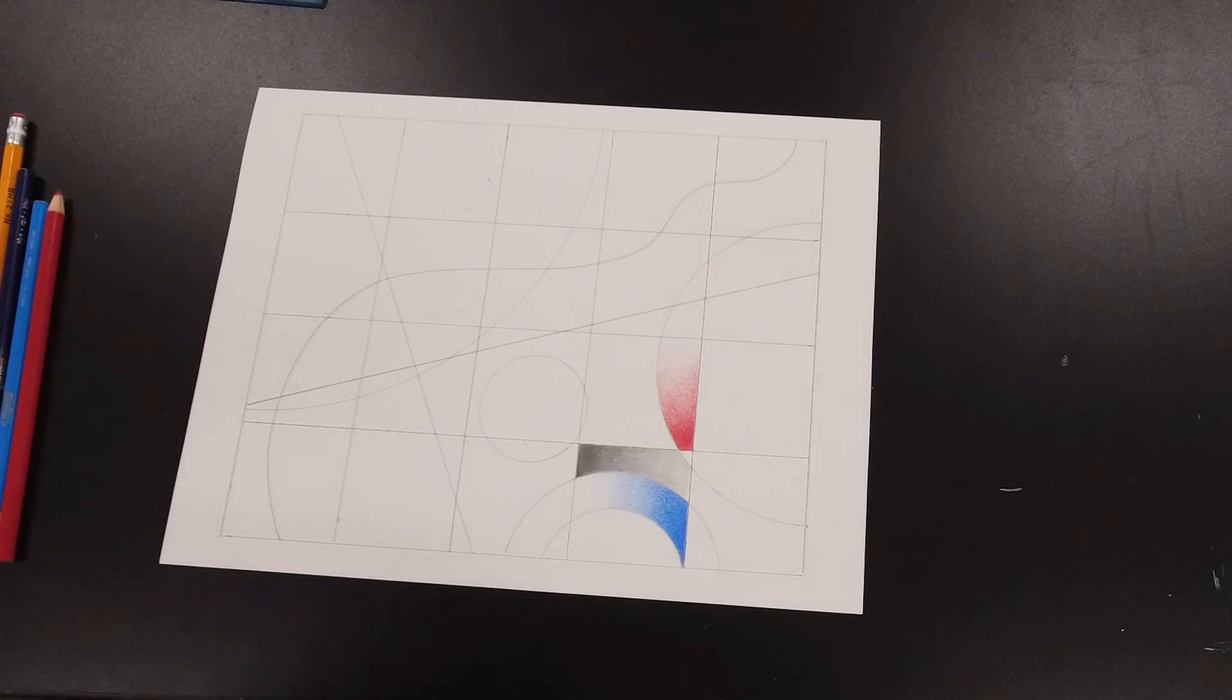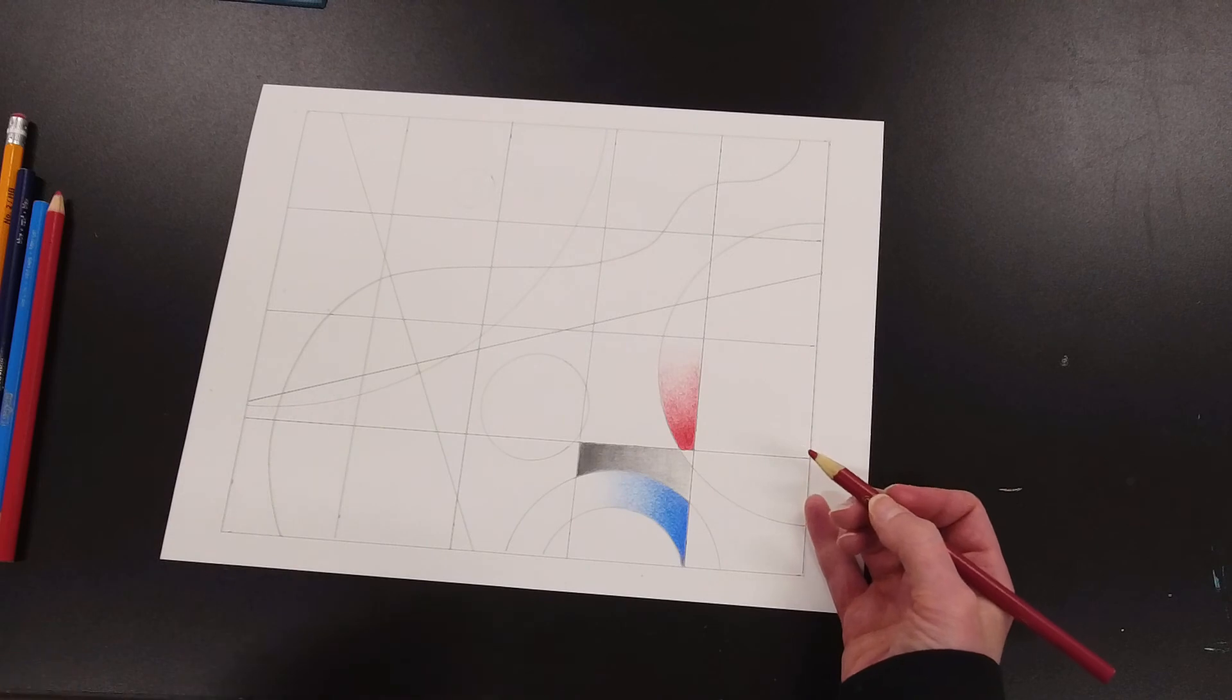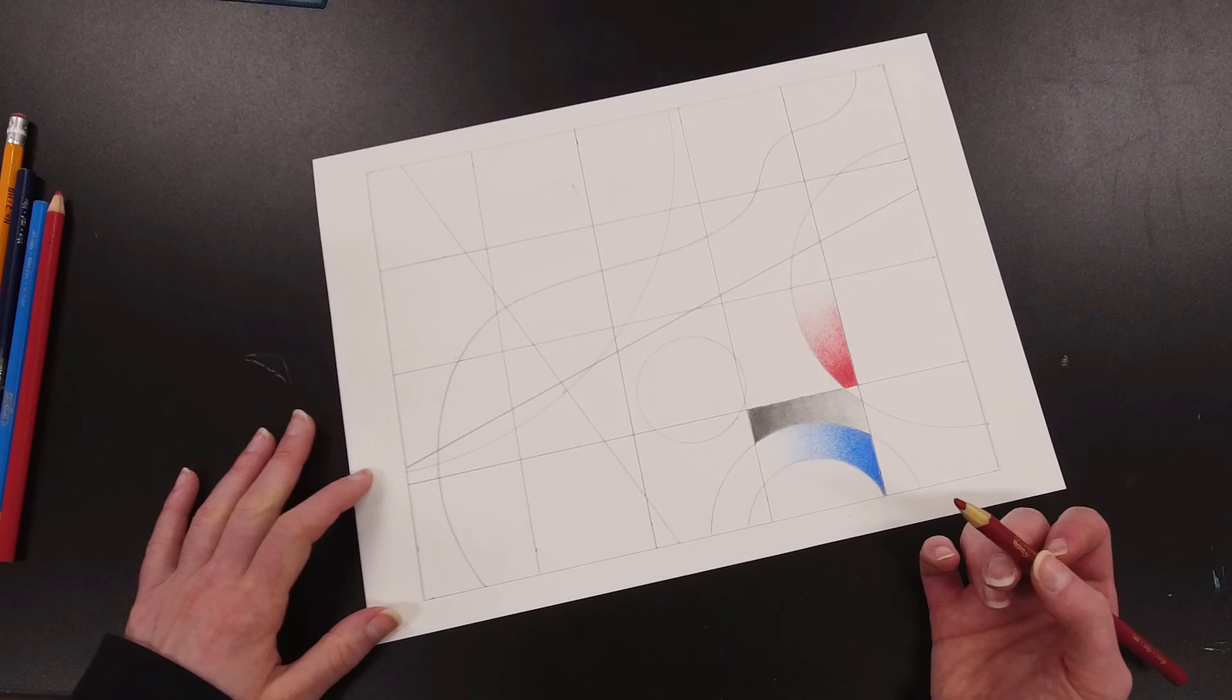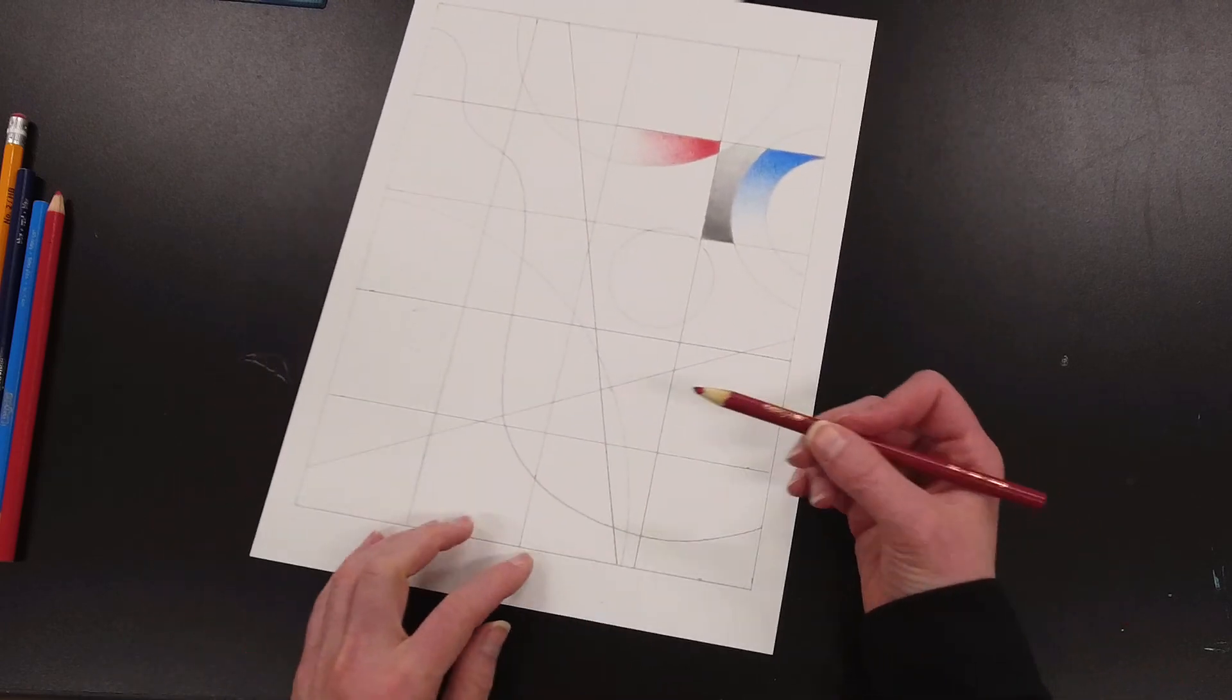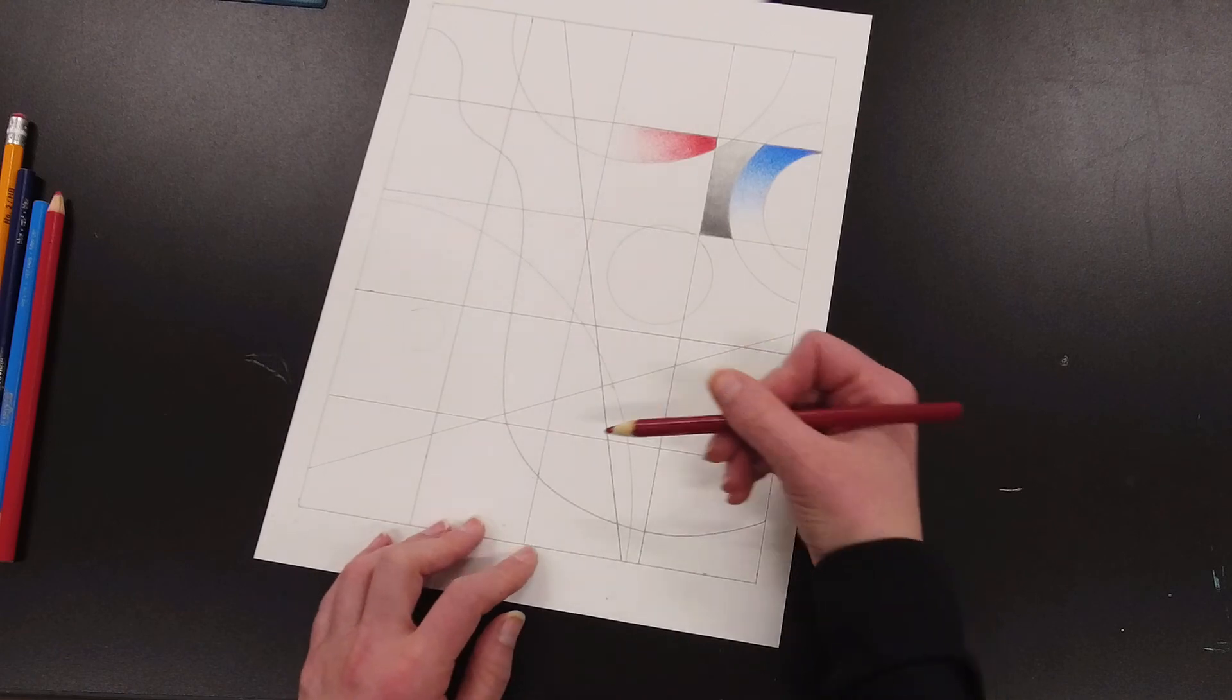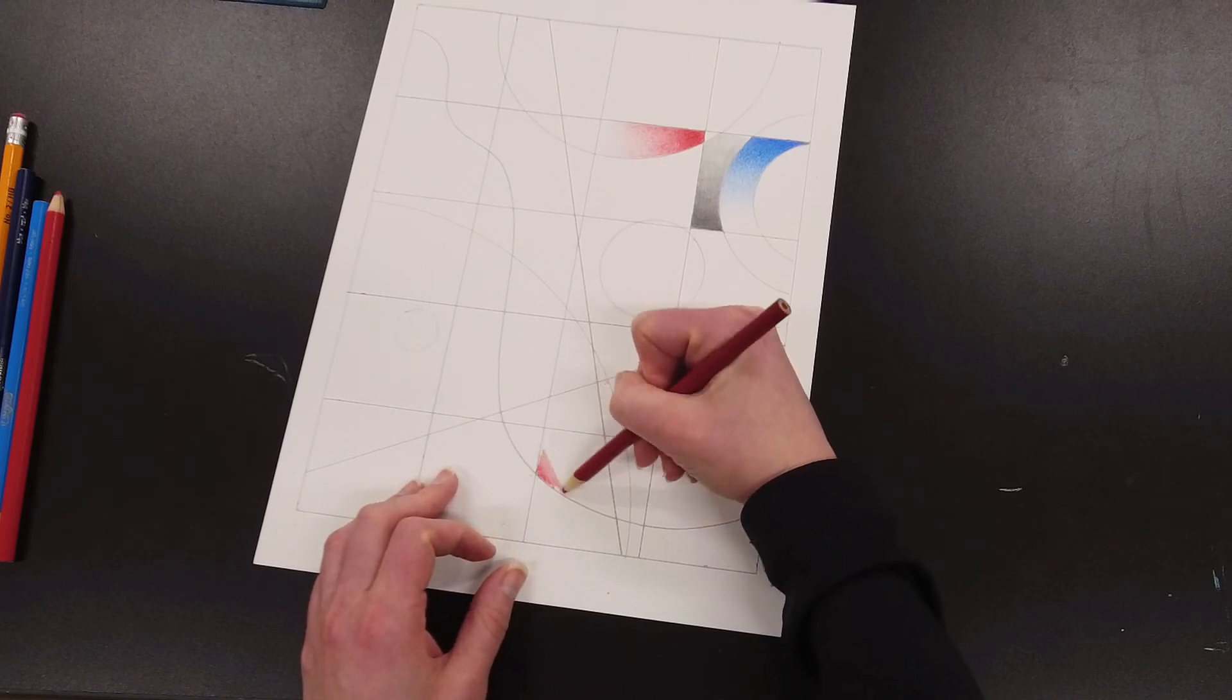Now I'm going to do another example using the red, but this time I will put some blue into the shadow space so that you can see how that works. This time I'm going to do sort of a diagonal value scale right here. So it's going to start toward the corner and it's just going to go diagonally across that space.